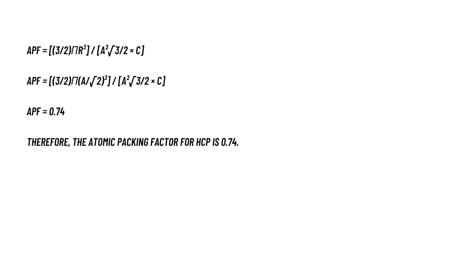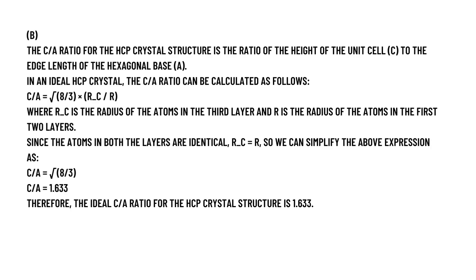The APF for HCP can be calculated as follows. Number of atoms in each unit cell is 2 plus 1/2 times 2 equal to 2, the formula is given below you can check it out. So the volume of the atoms in each cell equals 2 times 4/3 times pi r cubed, the formula is also given.